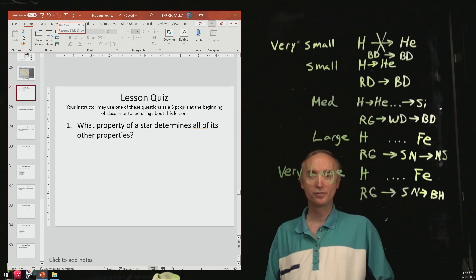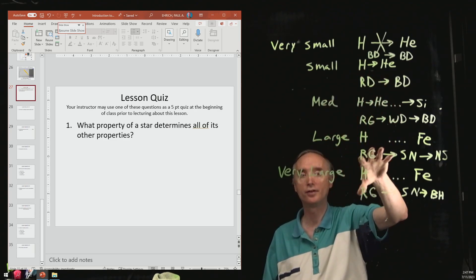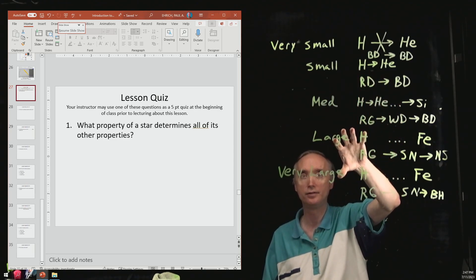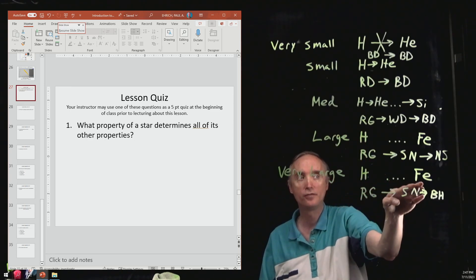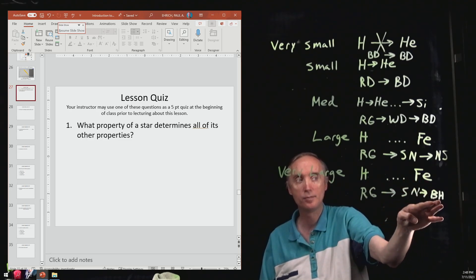Okay, if you don't mind, I think I'm going to sit for this, so let's go through our lesson quiz. Here's our summary of everything that we've talked about today. I've included the very large stars, which manufacture iron. They do go supernova, and then they become black holes.